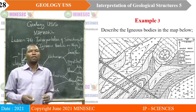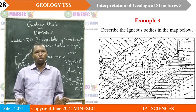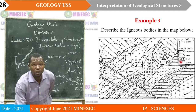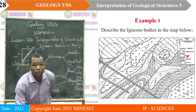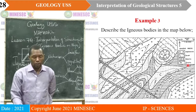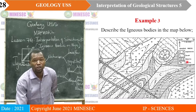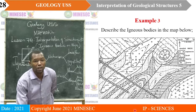Example 3: describe the igneous bodies in the map below. Looking at the key, we have granite, diorite, dolerite, basalt, and agglomerate. Just from the key, you can already know the type of intrusions present. Granite will indicate major intrusion. Dolerite will indicate minor intrusion. Basalt will indicate lava flow. Agglomerate will indicate pyroclast.